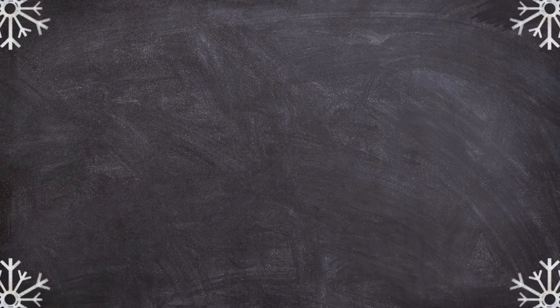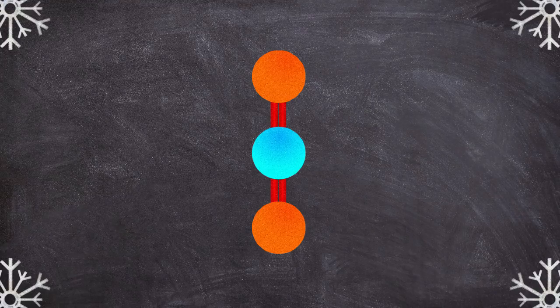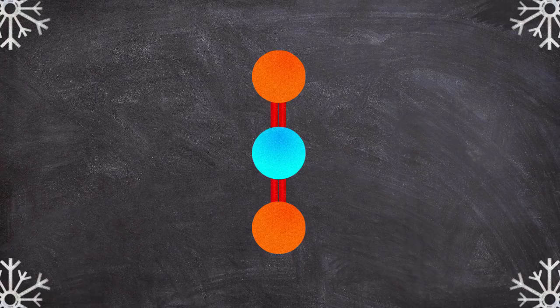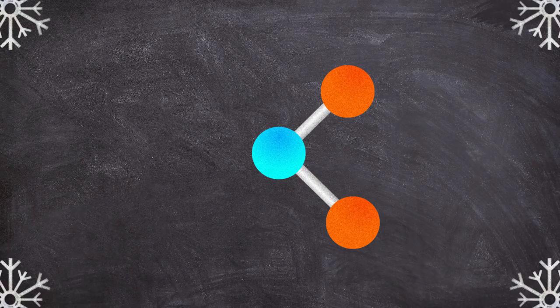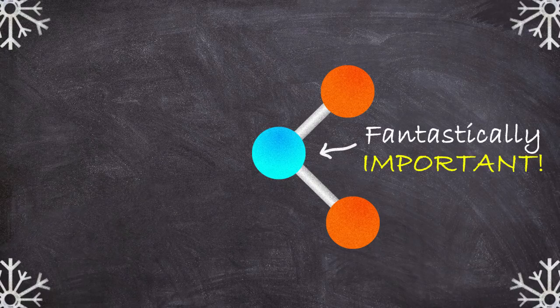This is different than, for example, something like carbon dioxide, which also has two atoms bonded to a central atom, but there's no bend. CO2 is called a linear molecule. So this bend in water molecules is unusual, and as we'll see, it is super important.